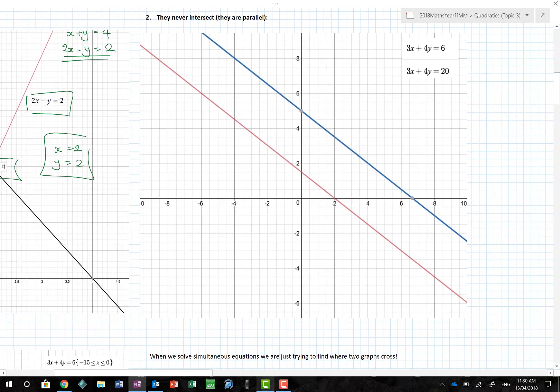The second way is that they never intersect, as in the lines are parallel. If we look at these two equations here, these lines are parallel. The 3x plus 4y is exactly the same. The left-hand sides are the same and only the numbers differ, so they are parallel. They are never going to meet. There's never going to be a solution to that graph.